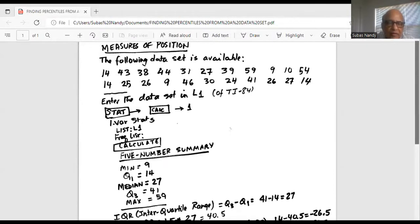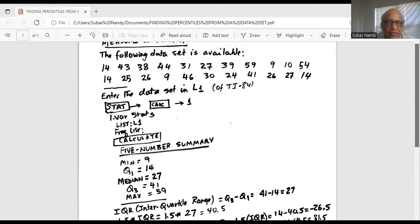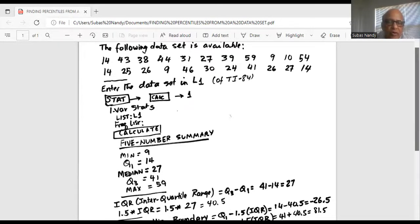There are three lines under one var stats. The first line should be list L1 because our data set is in L1. And frequency list, the second line should be empty. Then we scroll down to calculate with the down arrow key and hit enter.